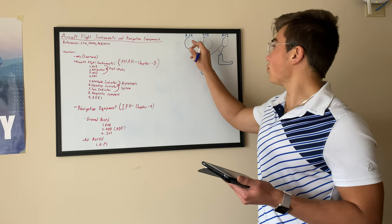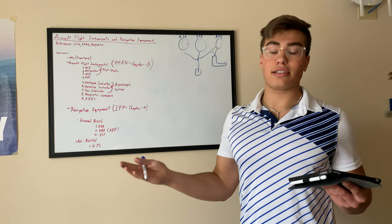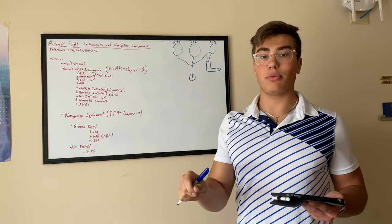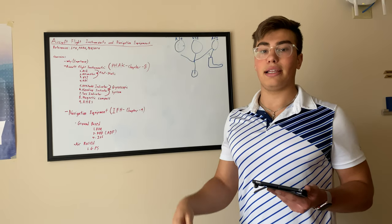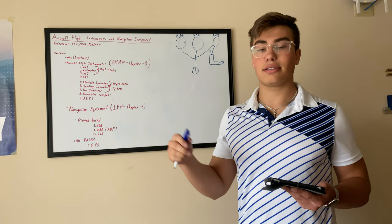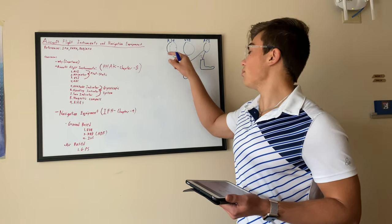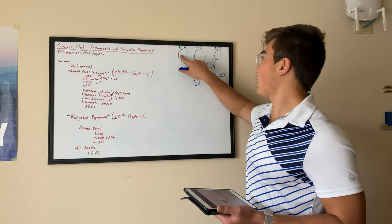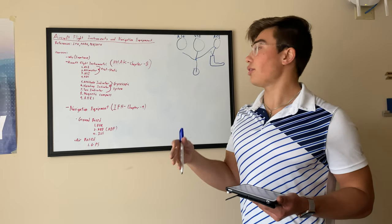Because conditions aren't always standard, we have a Kollsman window. What you do is put in the reading you get from your ATIS — most airports provide it — and it will give you more accurate altitude readings.